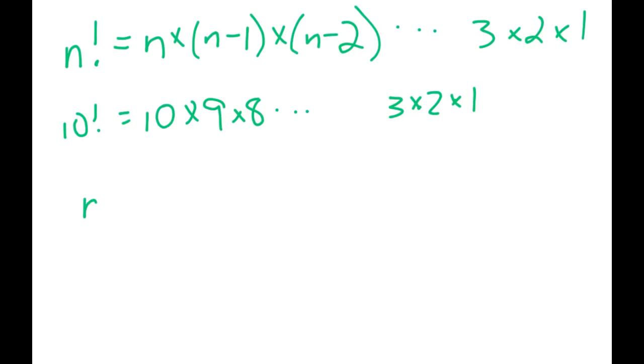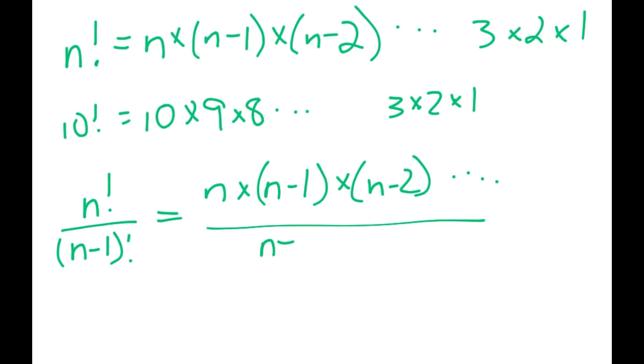So if I gave you a question like n factorial divided by n minus 1 factorial, you can see that this would be n times n minus 1 times n minus 2 and so on. And then on the bottom, we'd have n minus 1 factorial would be n minus 1 times n minus 2 and so on. So you can see here all of those would cancel. So our final answer would just be the n left over. So if you do get algebra, they are a little more complicated, but you can always do them the same.